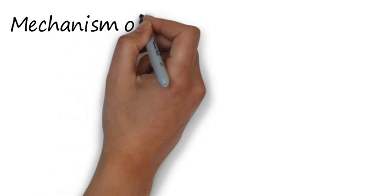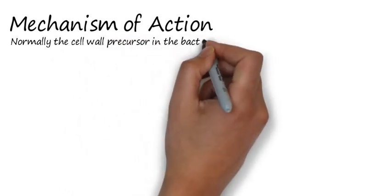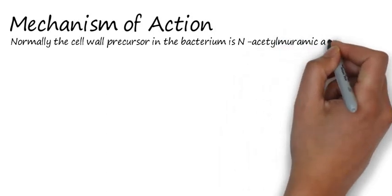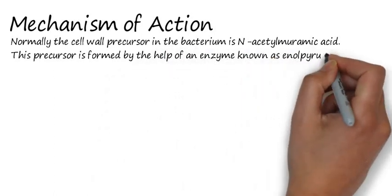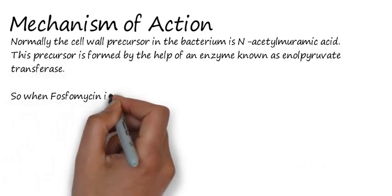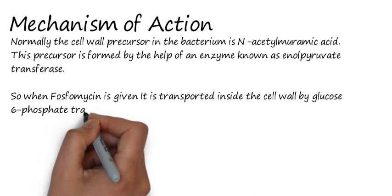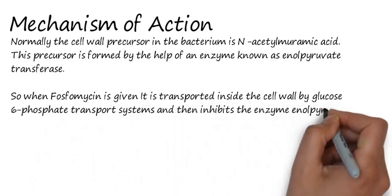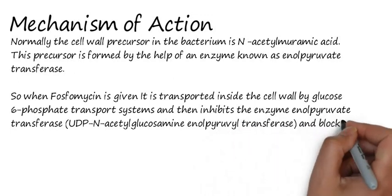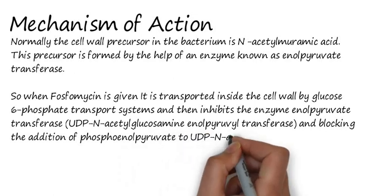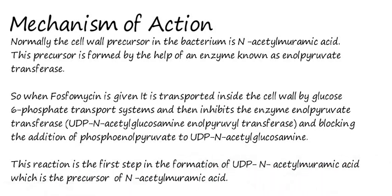Now the most important thing is the mechanism of action of Phosphomycin. Normally, the cell wall precursor in the bacterium is N-acetylmuramic acid. This precursor is formed by the help of an enzyme known as enol pyruvate transferase. When Phosphomycin is given, it is transported inside the bacterium by the glucose-6-phosphate transport system, and then inhibits that enzyme known as enol pyruvate transferase, commonly known as UDP-N-acetylglucosamine enol pyruvate transferase, blocking the addition of Phosphoenol pyruvate to UDP-N-acetylglucosamine.